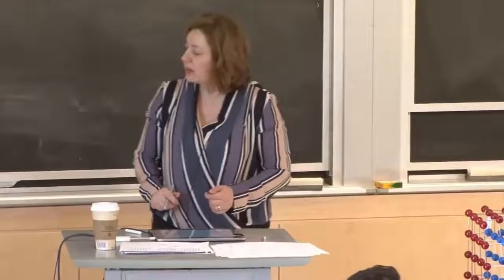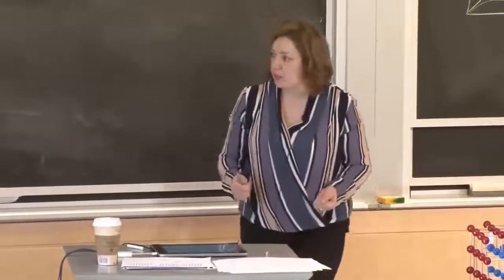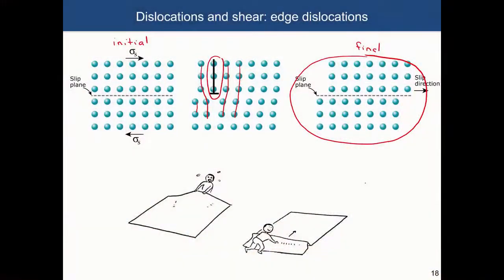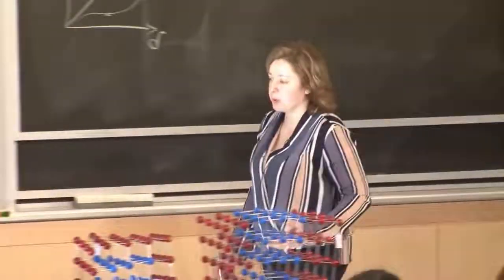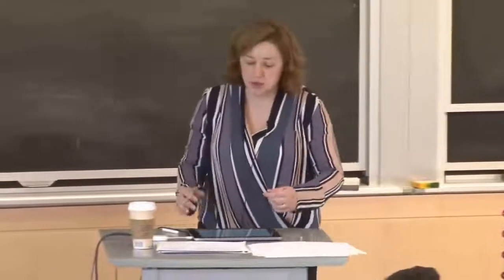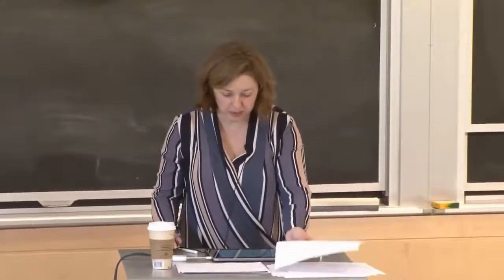You can think about this intuitively if you have a carpet — it's much easier to move the carpet if you do it gradually, instead of just pulling something that has large friction with the floor. There is a certain intuition you can apply here that explains why these steps are easier to perform and why you need less stress to plastically deform a material.